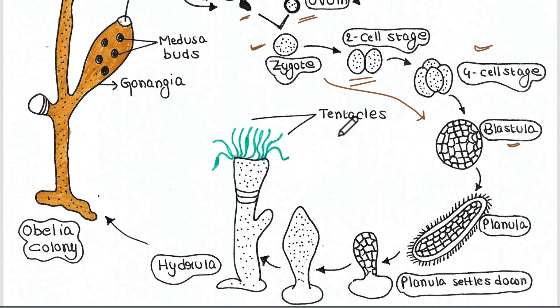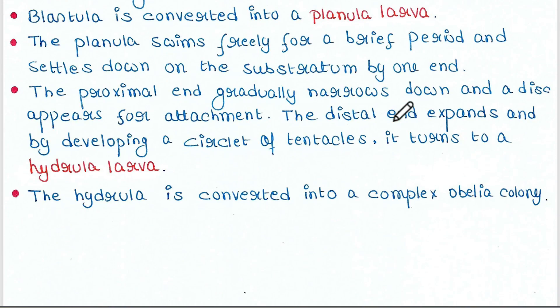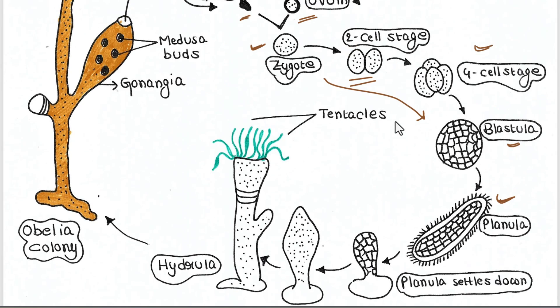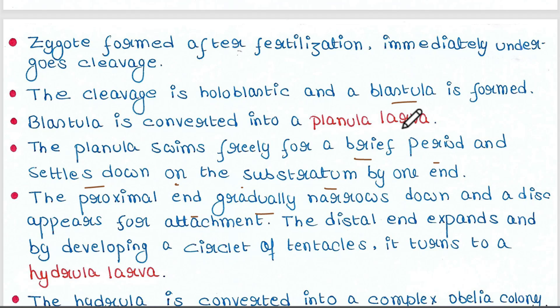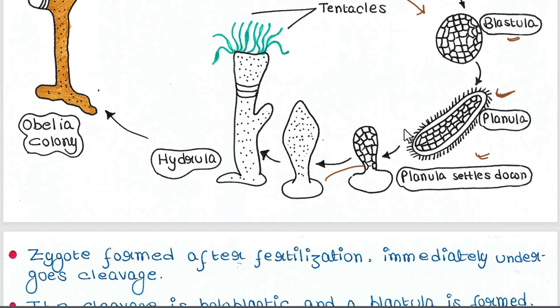The planula larva is formed from the blastula. The planula swims freely for a brief period and then settles down on the substratum by one end. The proximal end gradually narrows down and a disc appears for attachment — you can see this proximal end getting narrowed down, and this narrow part forms a disc-like structure that helps attach to the substrate.